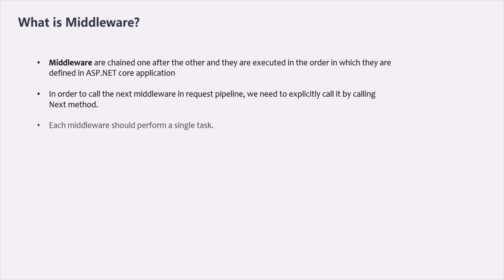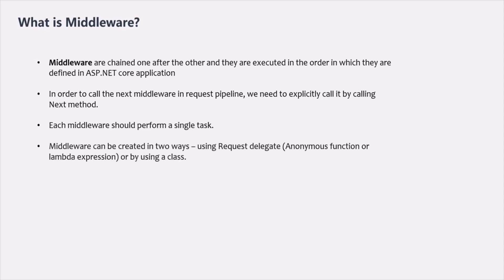Each middleware should perform a single task — it should not be doing multiple tasks. And in ASP.NET Core, middleware can be created in two ways: by using a request delegate, for example using an anonymous function or lambda expression, or by using a class. We will see how to create middleware using both approaches in the coming lectures.